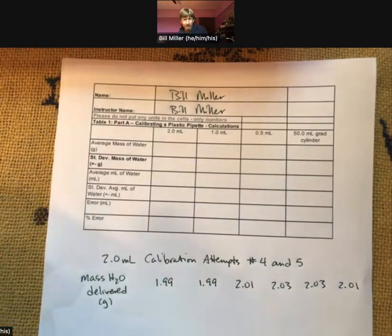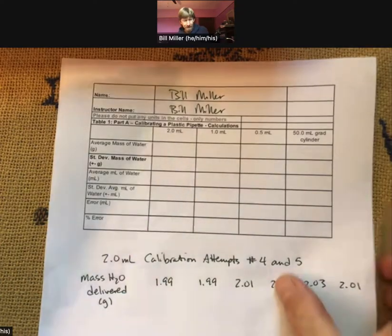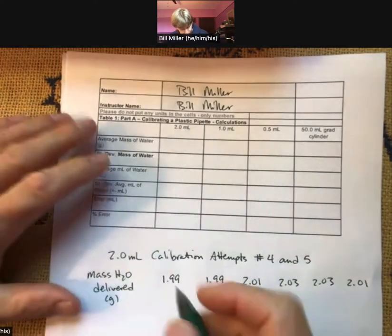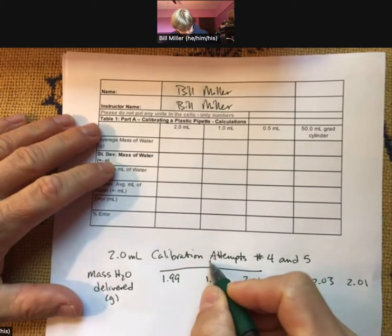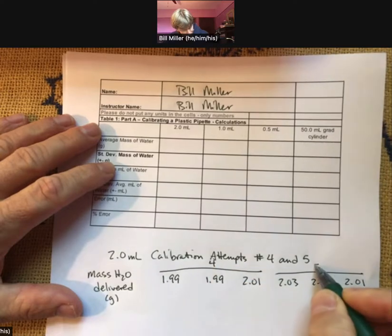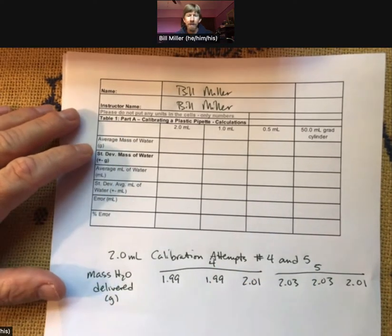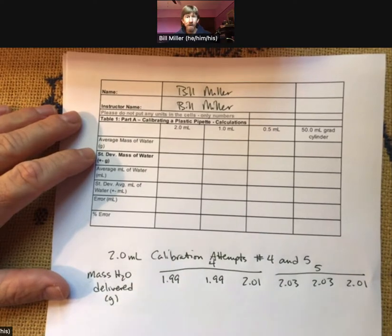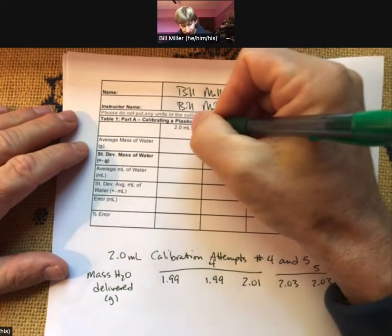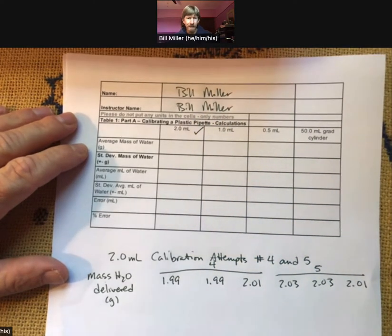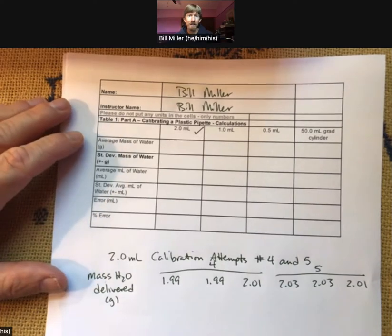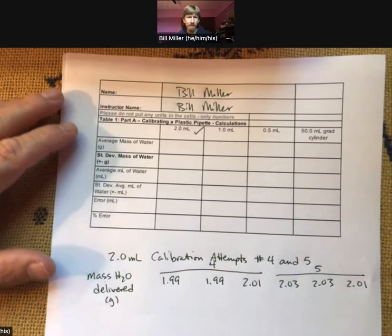What I've done is I've taken from calibration attempt four and five, and these three are from number four, and these three are from number five, my six masses of H2O delivered. Those are the numbers we're going to need to fill out this first column, and I've chosen these six because these are my two good calibration attempts within 0.02 grams.